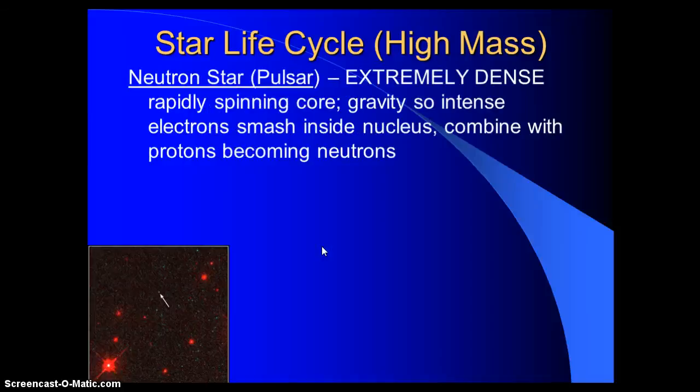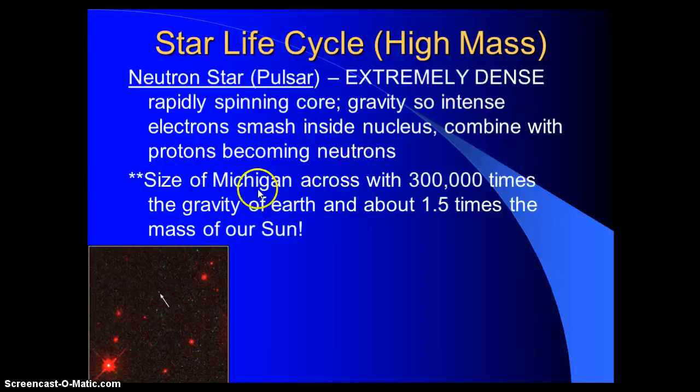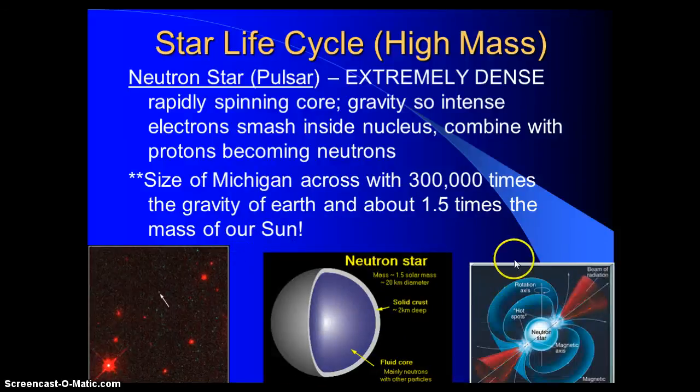Neutron star. So what are the dead cores of a supermassive star? There's two options, a neutron star or a black hole. So a neutron star is also called a pulsar, and I'll tell you why in class. But it's extremely dense. It's a rapidly spinning core because of the collapse and then the explosion. Gravity is so intense that the electrons in the atoms smash inside the nucleus and combine with protons. Friends, this is not normal. This is not natural. And so it's full of neutrons. They become neutrons. Size-wise, these would be the size of Michigan. 300,000 times the gravity of Earth, and about one and a half times the mass of our sun. All smashed into the size of Michigan. These are just some images that show kind of an electric magnetic field, why they have beams of radiation coming out the poles and so on.